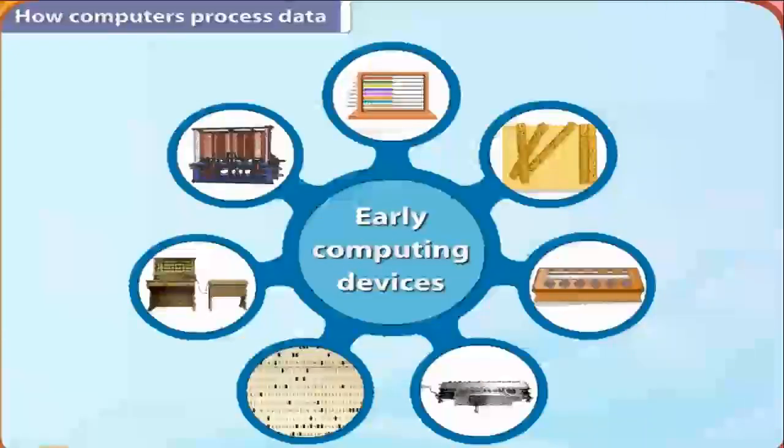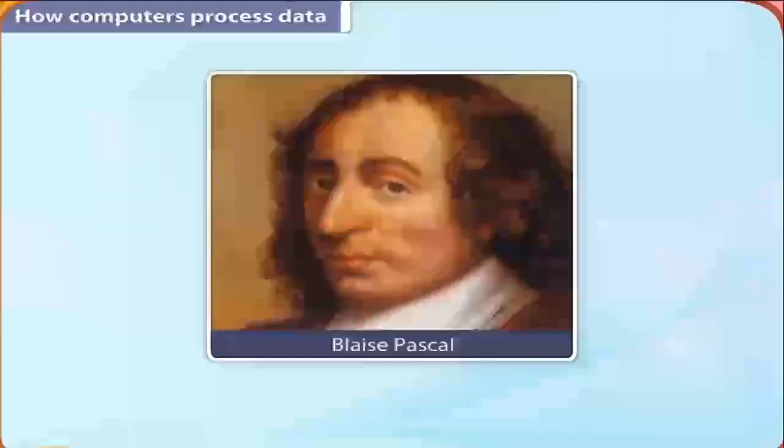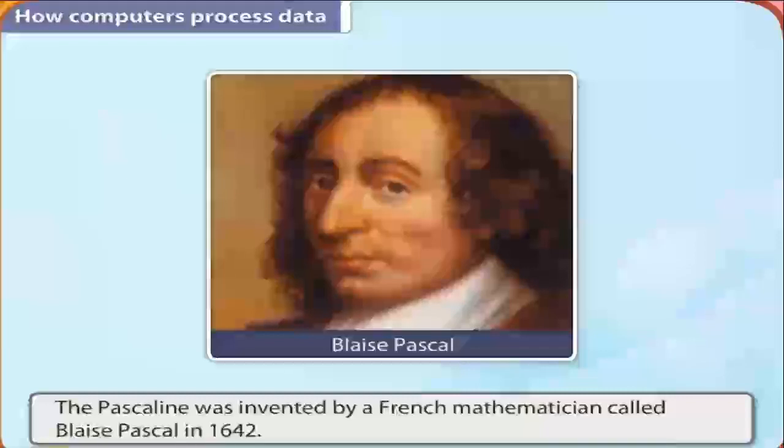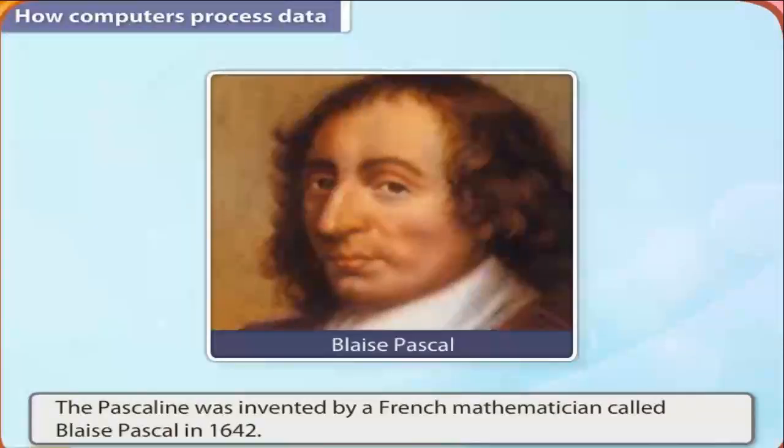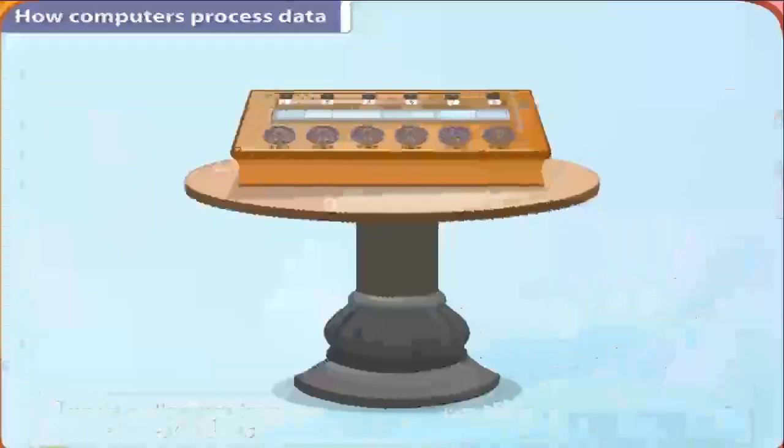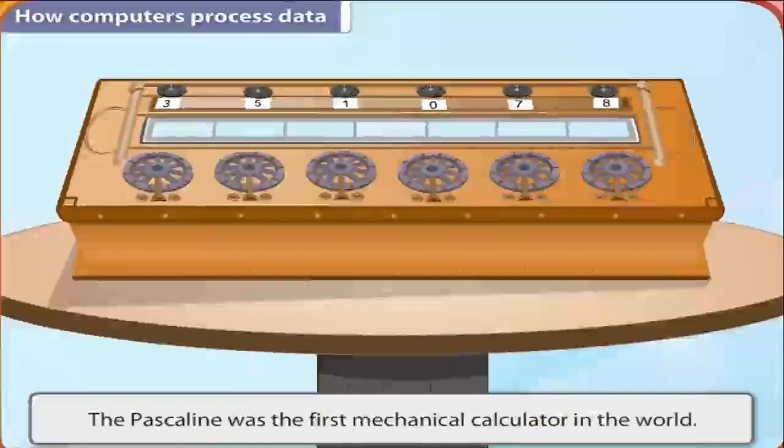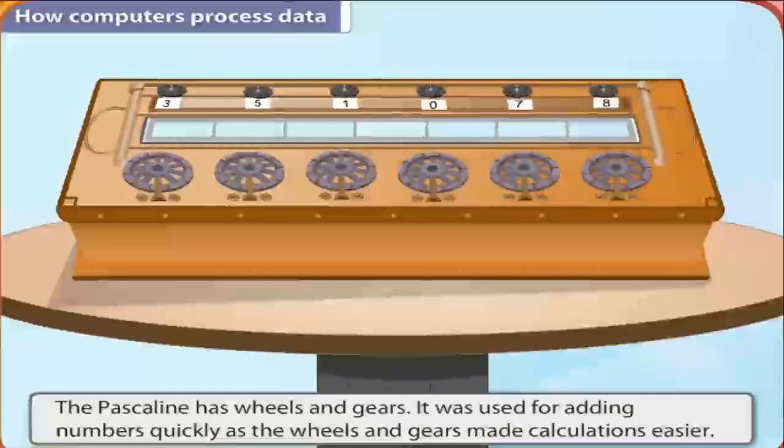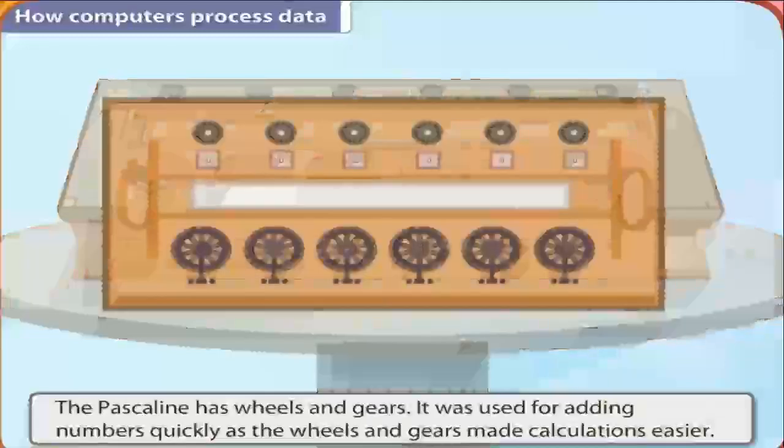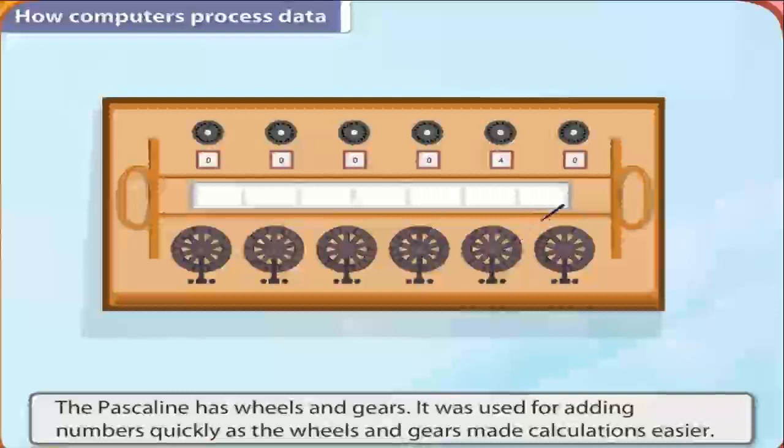In 1642, the Pascaline was invented by a French mathematician called Blaise Pascal. The Pascaline was the first mechanical calculator in the world. The Pascaline has wheels and gears. It was used for adding numbers quickly as the wheels and gears made calculations easier.